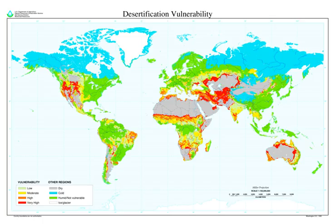Desertification has played a significant role in human history, contributing to the collapse of several large empires, such as Carthage, Greece, and the Roman Empire, as well as causing displacement of local populations. Historical evidence shows that the serious and extensive land deterioration occurring several centuries ago in arid regions had three epicenters — the Mediterranean, the Mesopotamian Valley, and the lowest plateau of China, where population was dense.